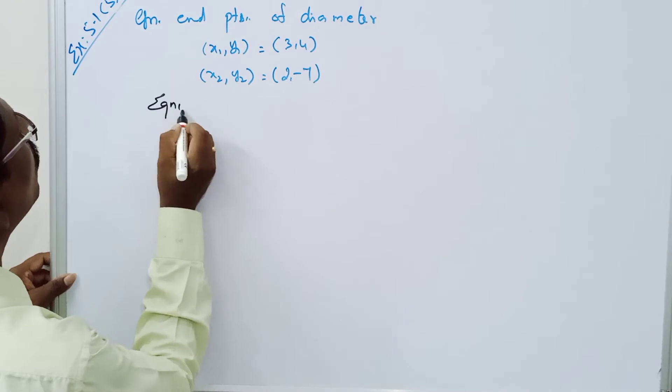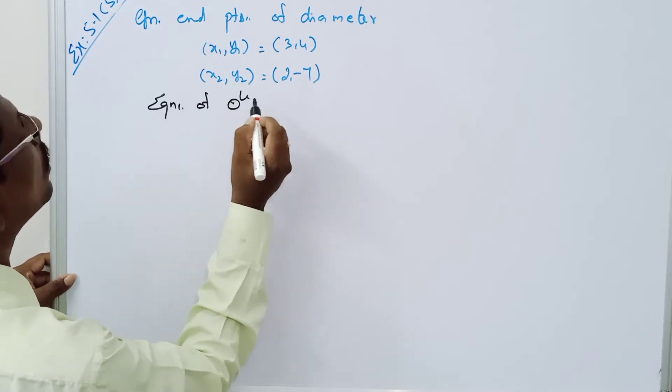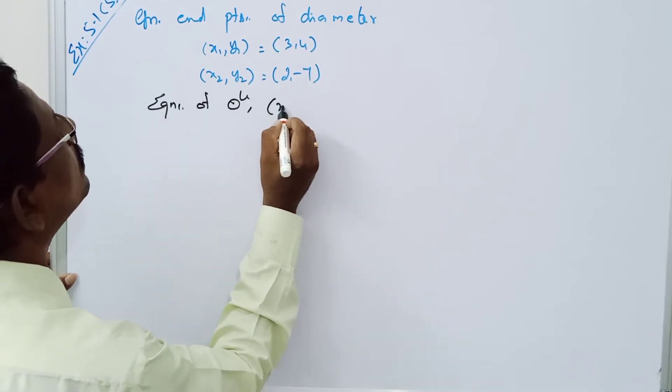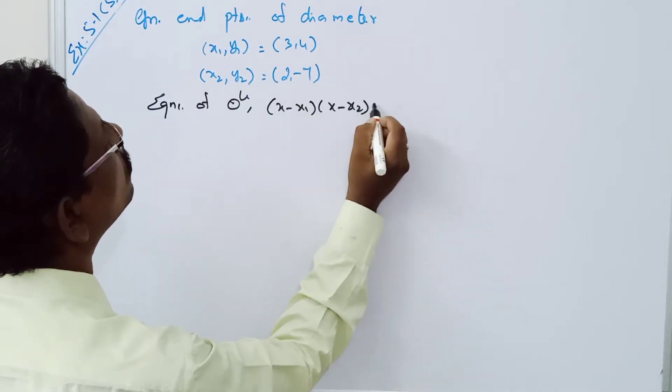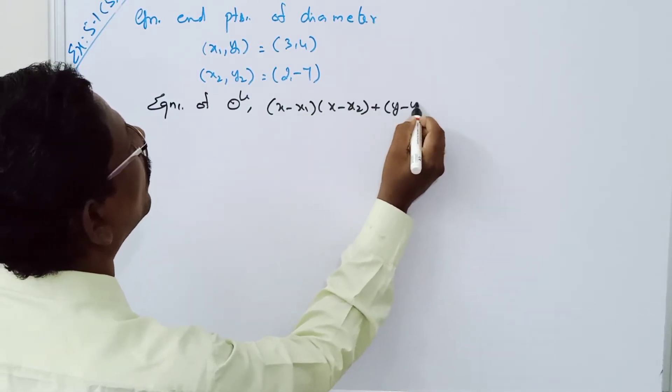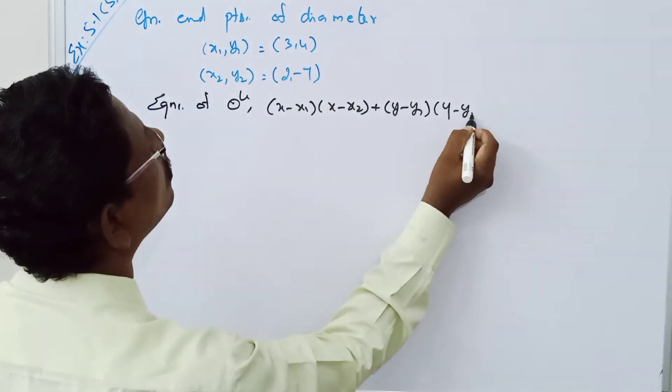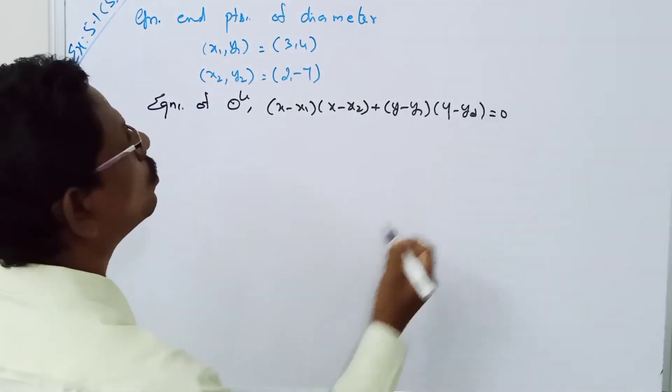Therefore, equation of circle: x minus x1 into x minus x2 plus y minus y1 into y minus y2 equal to 0.